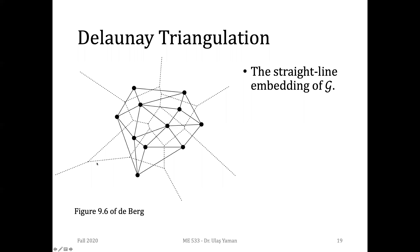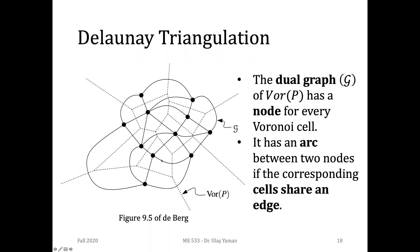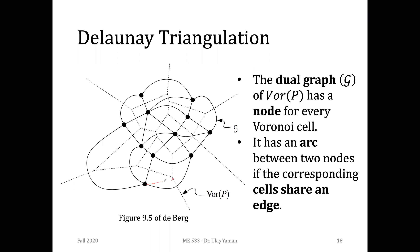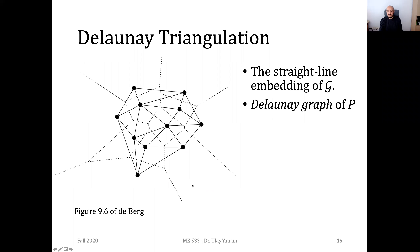A student asks: can the line connecting the sites be anywhere on the common edge? Yes, they can be anywhere, but they must at least touch the common edge between the two Voronoi cells — that is the only requirement. This is the Delaunay graph, also called the dual graph. Since they share the same abbreviation, there are sometimes misusages, but they refer to the same thing.